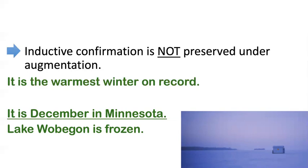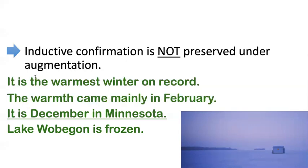The funny thing about inductive confirmation too is if I could take it away by adding more, I can actually add more and give it back. Even if I tell you it's the warmest winter on record, maybe it's also true that all of that warmth came later in the season — in February and March — so really December was totally typical. And then again, that makes it likely that the lake is frozen in December. So the funny thing about inductive confirmation is you can make it flip-flop back and forth just by augmenting, by adding more and more information. Whereas deductive validity is not like this at all — once you've got deductive validity, you can never undo it by just adding more information; you can only undo it by taking information away or changing the conclusion.